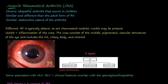Let's talk about juvenile rheumatoid arthritis, or JRA. It's similar to the adult version of rheumatoid arthritis, but it's in adolescence. It's a chronic idiopathic arthritis that occurs in children. Chronic means it happens over and over again. Idiopathic means we don't understand how or why it happens — there's an unknown cause. Arthritis is inflammation of the joint. Because it's idiopathic, it's also called JIA, juvenile idiopathic arthritis.